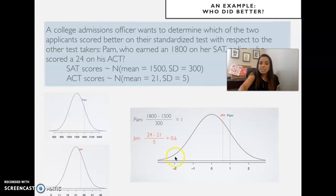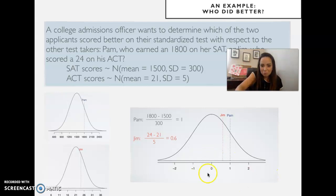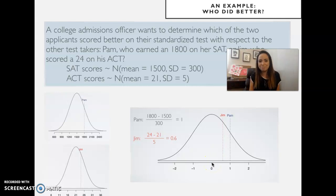What we did was consider Pam's and Jim's results in light of a standardized normal distribution. A standardized normal distribution has a mean of 0 — if your score equals the mean, subtracting gives 0, so that's where you land. The standard deviation is 1, because that's the unit we're standardizing to.